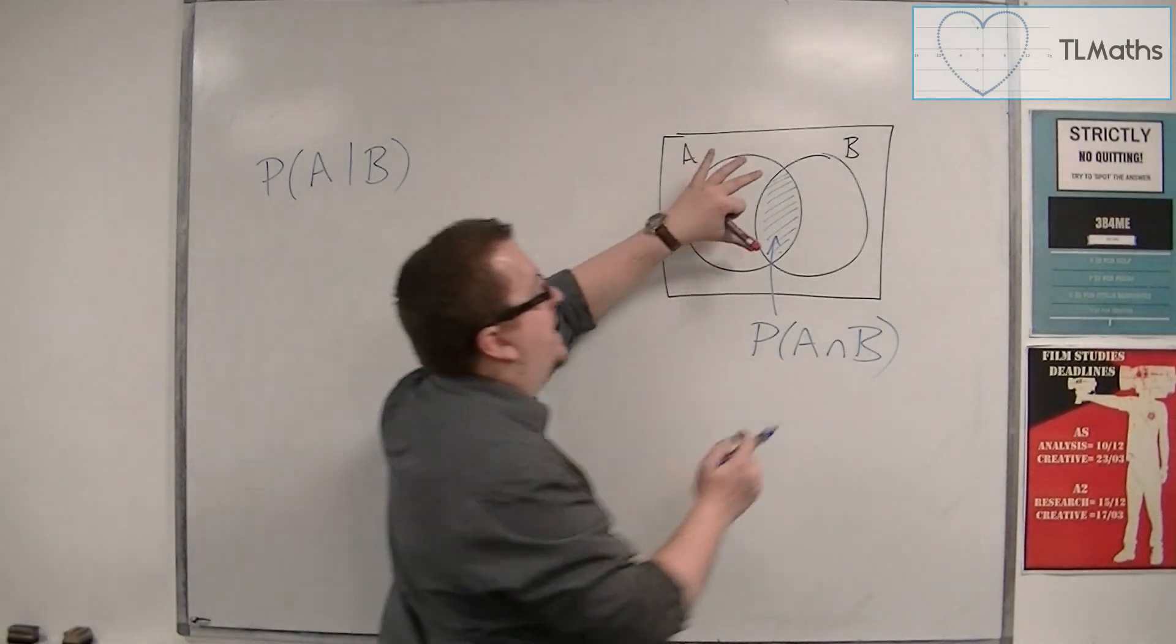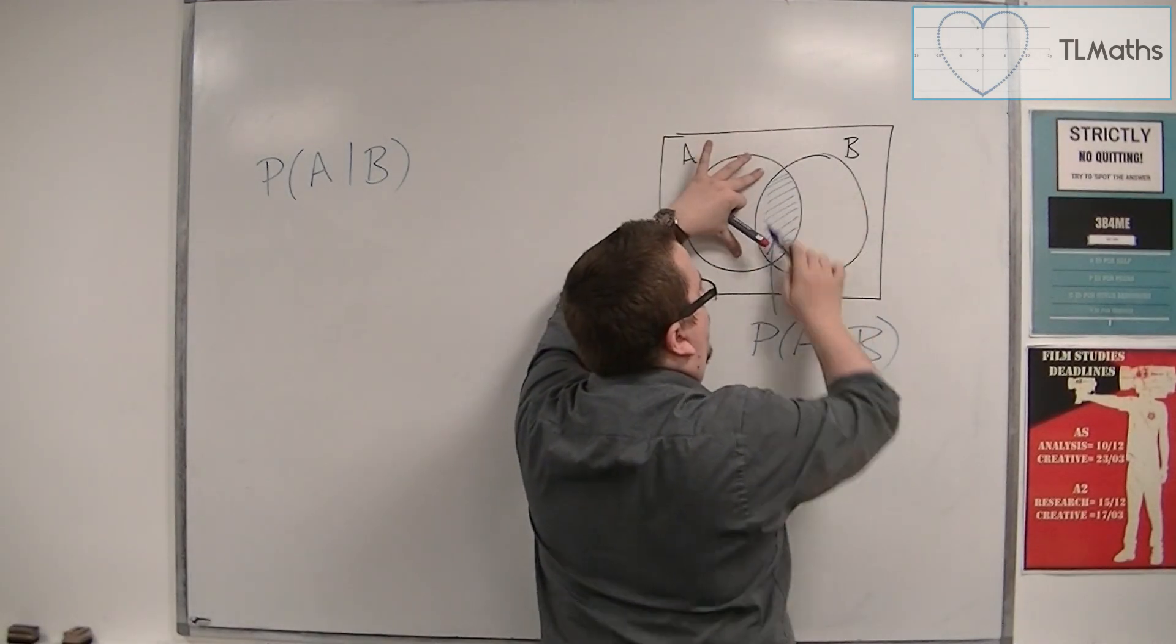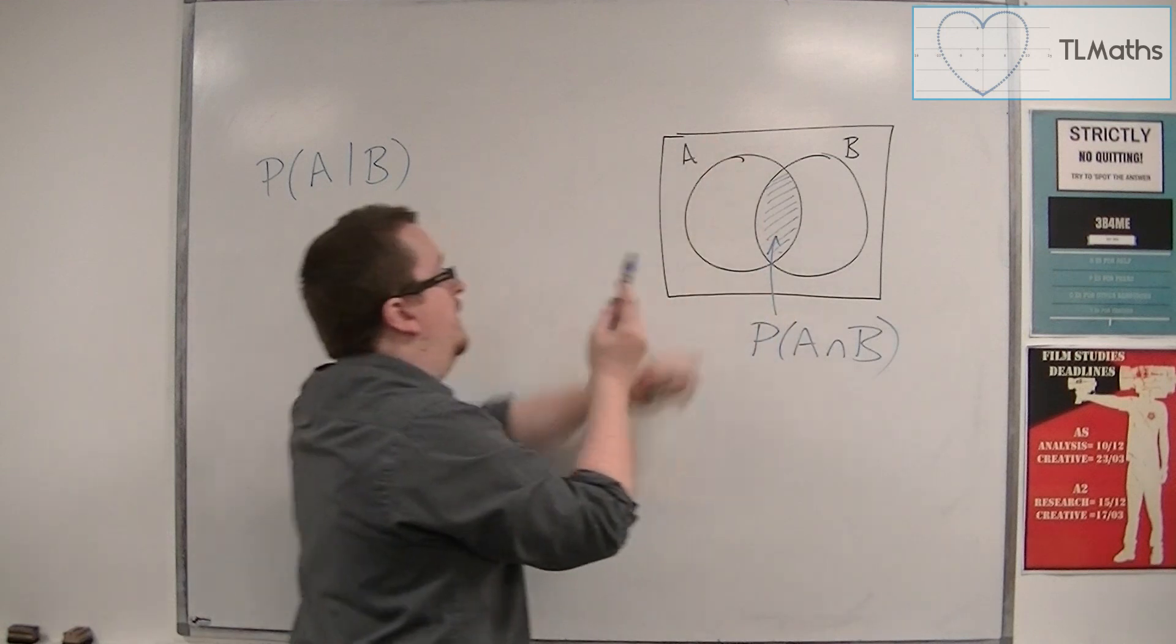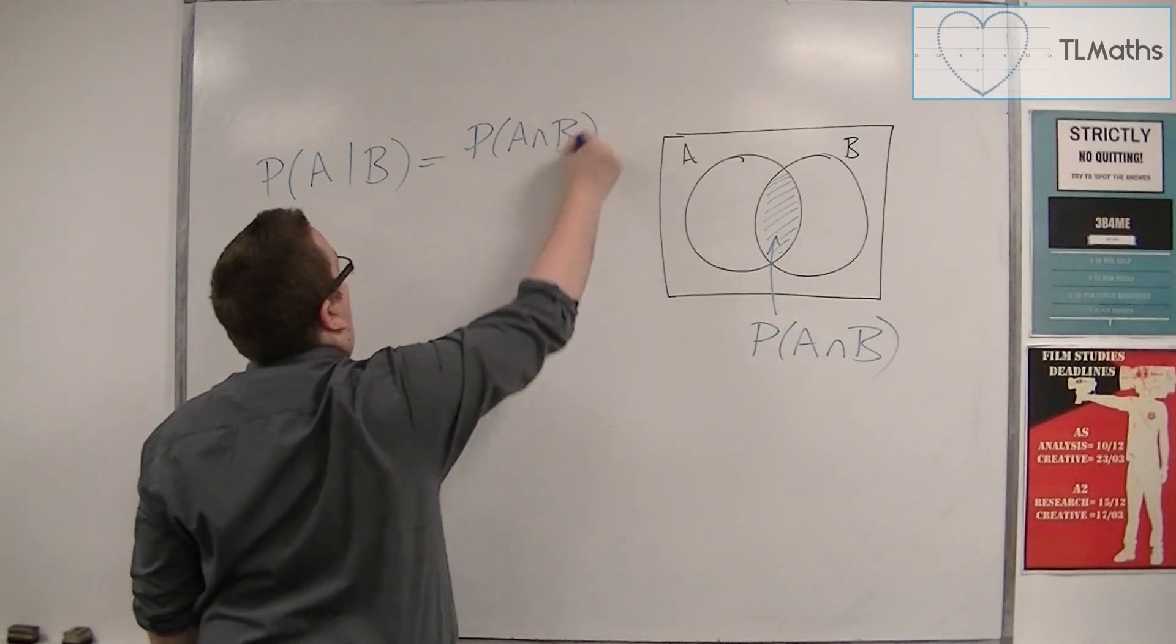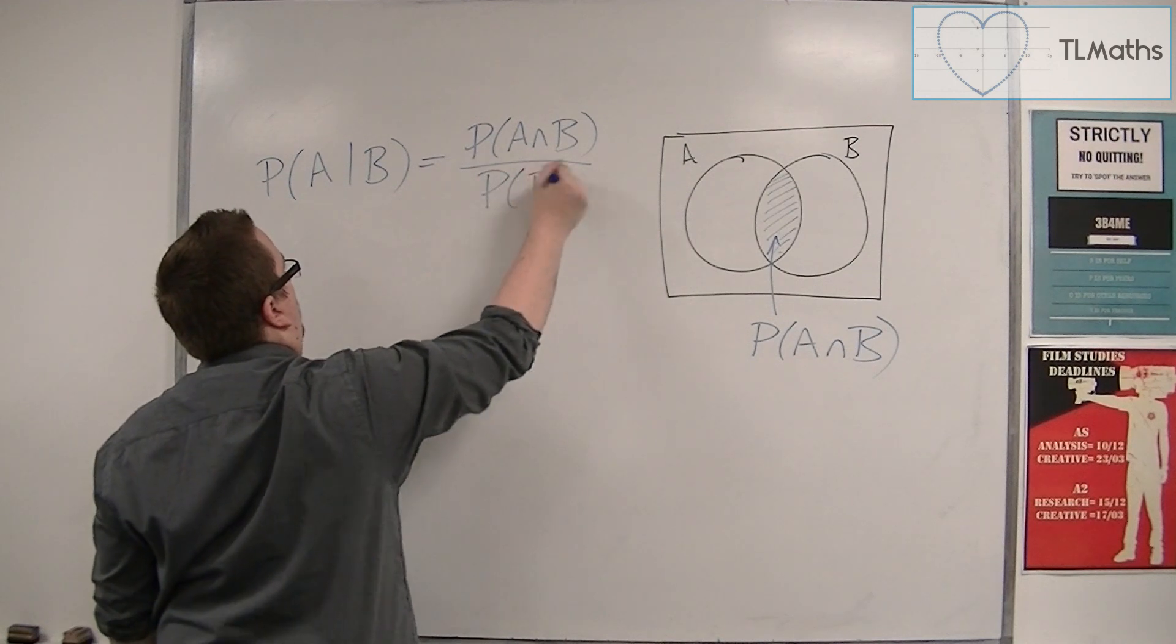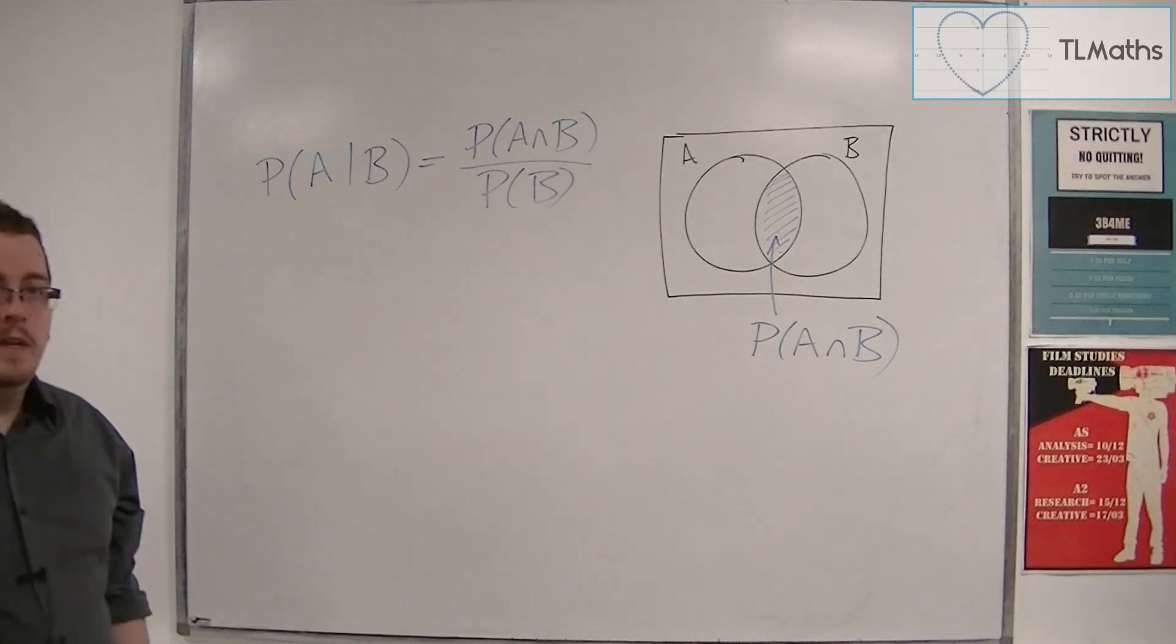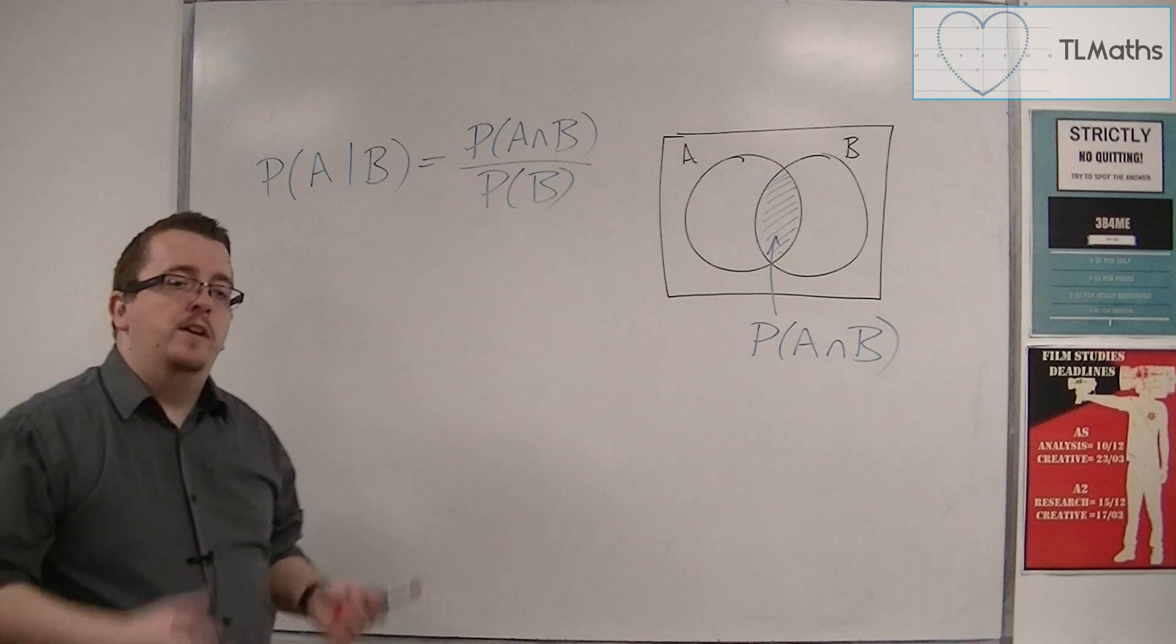if I'm just looking at that bit out of the whole, it's equal to the probability of the intersection out of the whole. So, probability of B. And this is the formula that we need.